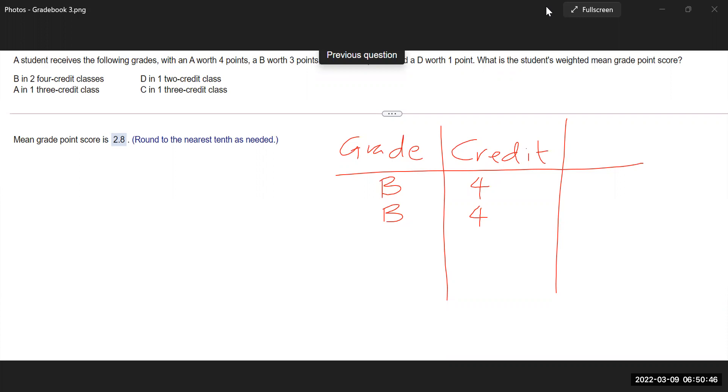And then let's look at A in one three credit. That means that there was a single A in one three credit and the credit that goes with that is three.